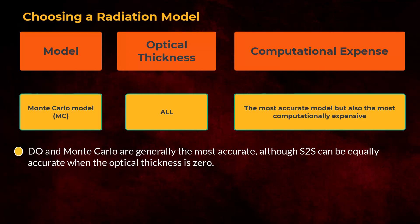In terms of accuracy, DO and Monte Carlo are generally the most accurate, although S2S can be equally accurate when the optical thickness is zero.